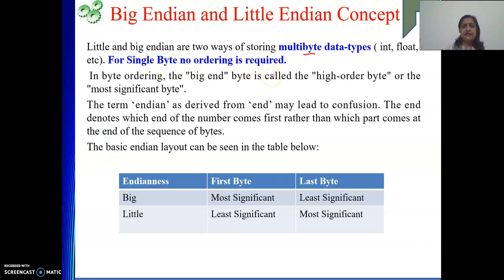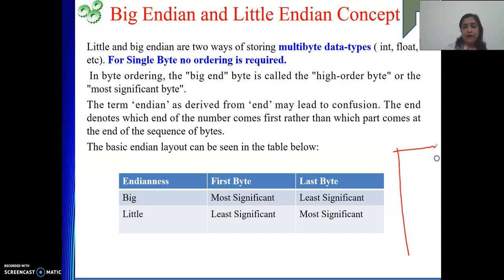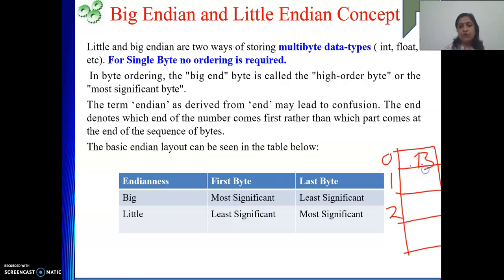Say my word length is four bytes and the machine is byte addressable. In memory, we are storing one byte of information in one location — address 0, address 1, address 2 — each location holds one byte. What that byte represents does not matter; what matters is that one location stores one byte.